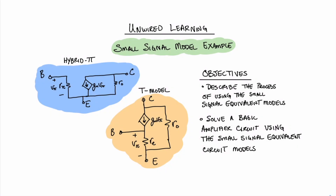Welcome to Unwired Learning. In this video, we're going to take a look at a transistor amplifier circuit and we're going to try to solve it using this small signal model. Before we can do that, we must describe the process of using the small signal equivalent models in the case of a transistor amplifier circuit.